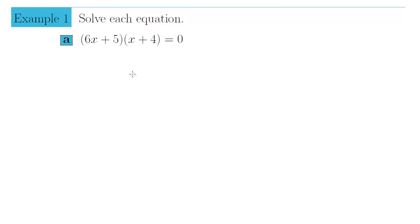Therefore, we can immediately apply the zero factor principle, which says that each of these quantities has to be set equal to zero to find the solutions to this equation. So we take the first factor, 6x plus 5, and we set it equal to zero. 6x plus 5 equals zero.